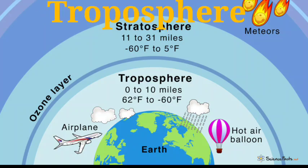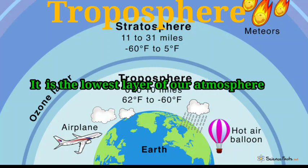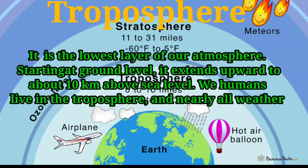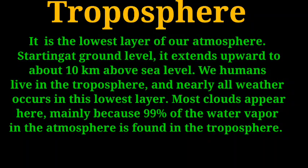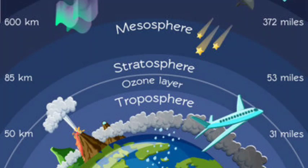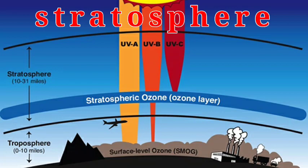Troposphere: this is the lowest layer of the atmosphere, starting from ground level and extending upward about 10 kilometers above sea level. We humans live in the troposphere, and nearly all weather occurs in this layer only. Most clouds appear here, mainly because 99% of the water vapor in the atmosphere is found in the troposphere. It is a very important layer where clouds, weather, and human beings exist.